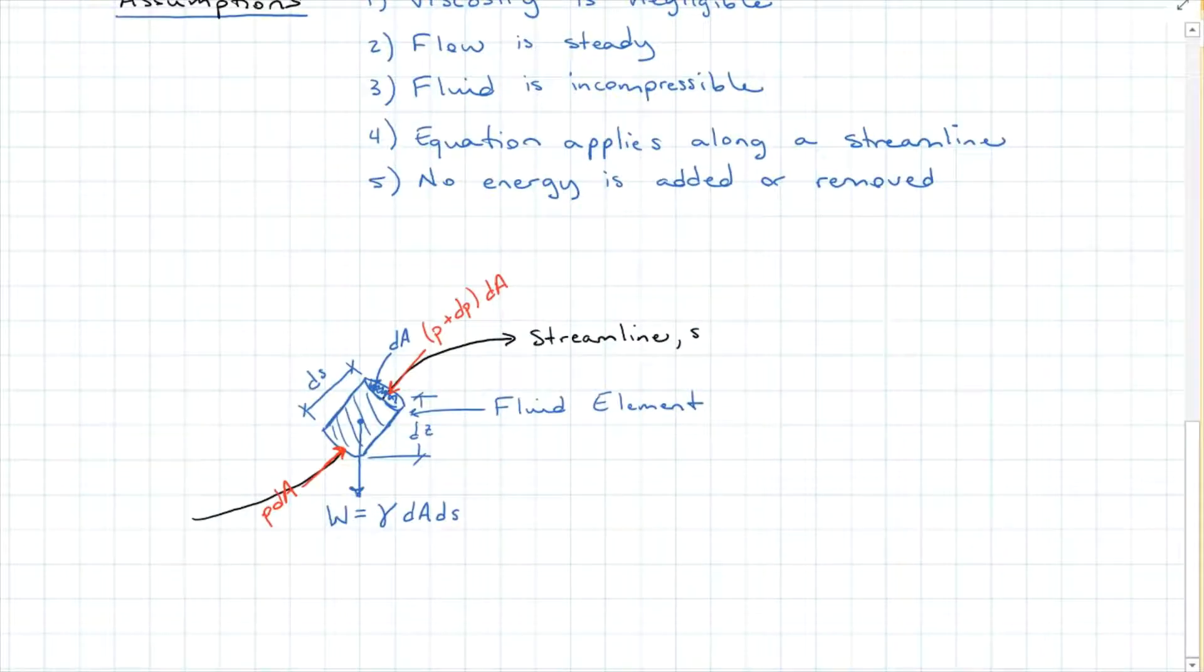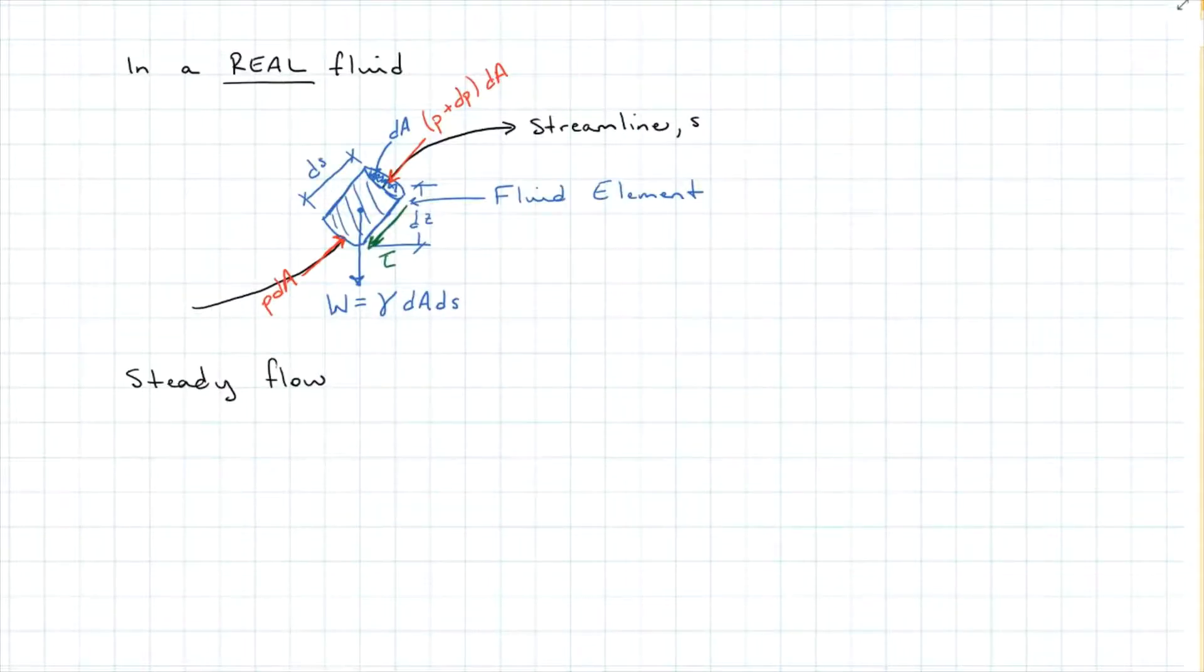Remember this fluid element acting along a streamline that we use to derive Euler's equation? Well, in a real fluid, we are going to have some friction, and that friction is causing shear stress tau. So adding this now.